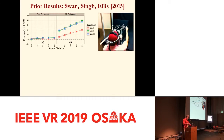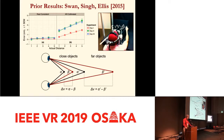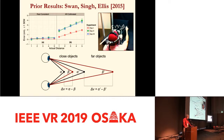This hypothesis can explain three properties of the prior results. First, depth matches of the virtual targets are overestimated relative to real targets. Second, the amount of overestimation increases with increasing distance. Third, the results are very linear in nature. All of those properties fit this model. Testing this hypothesis from the prior work was the primary motivation for the current work I am presenting today.